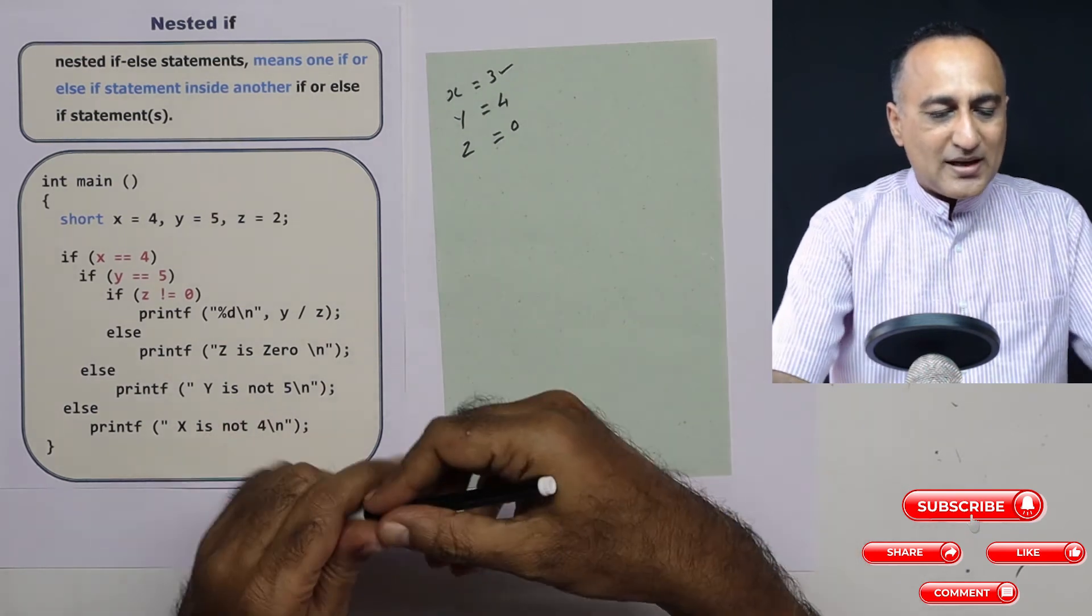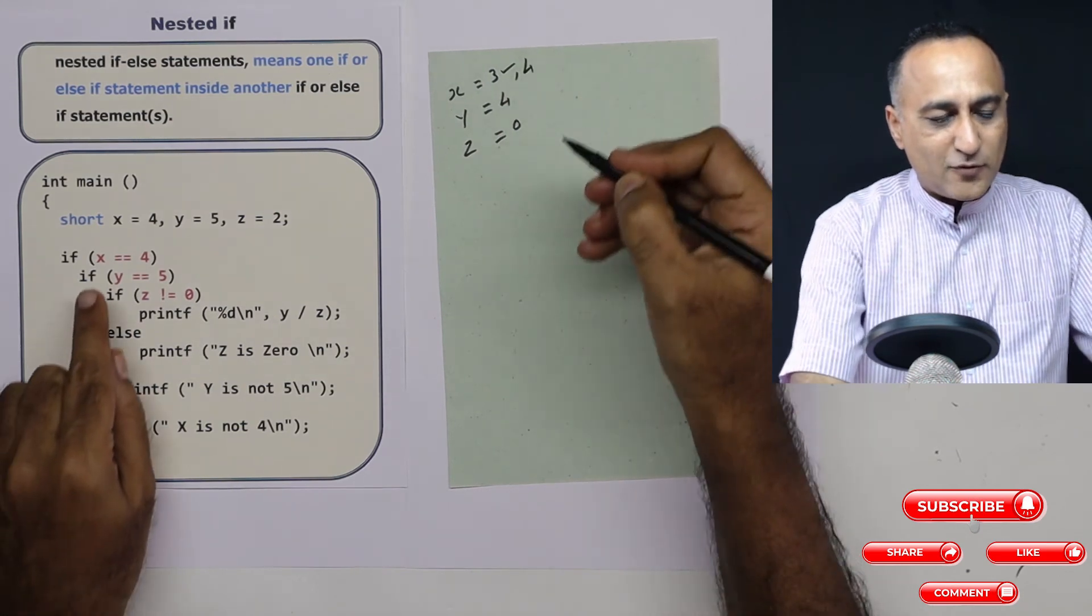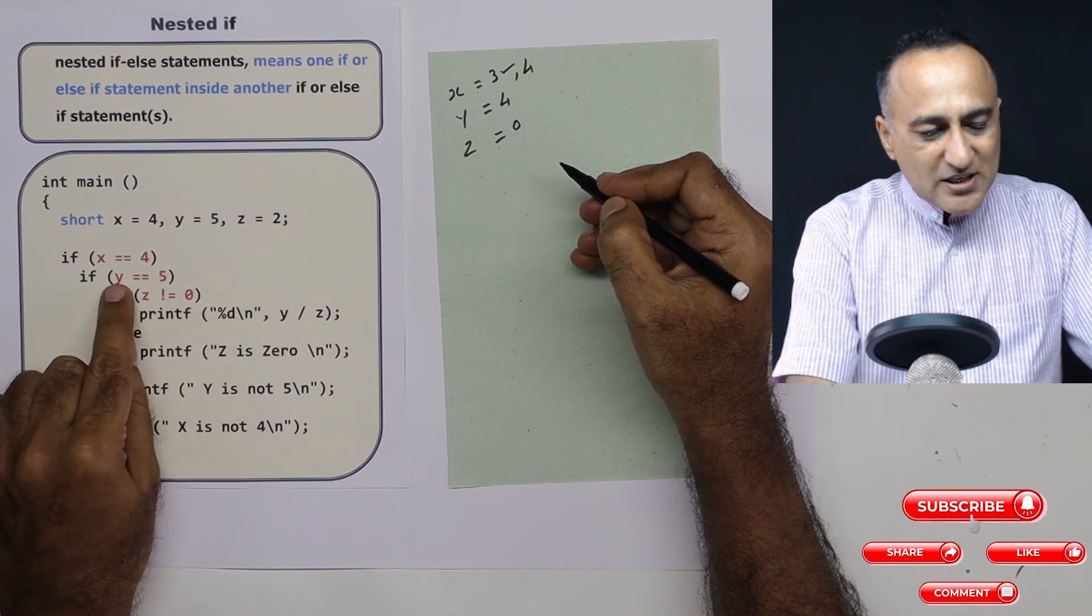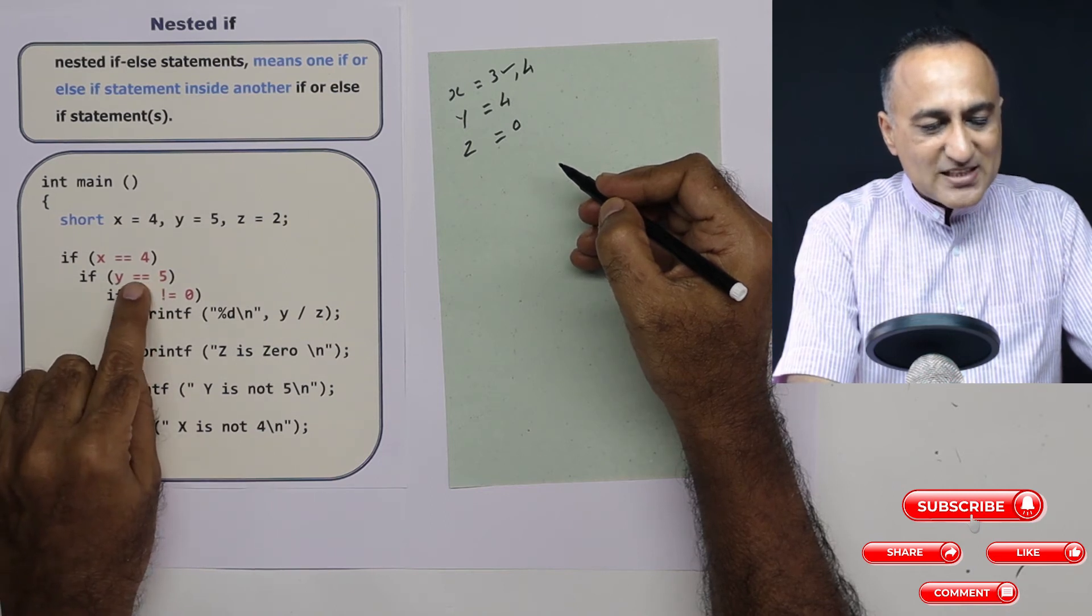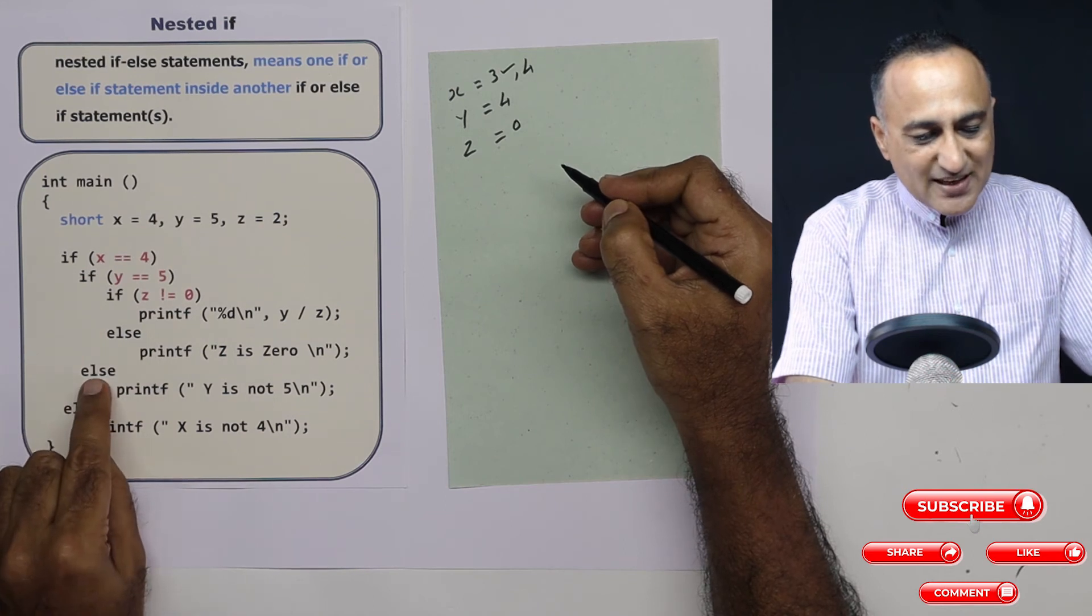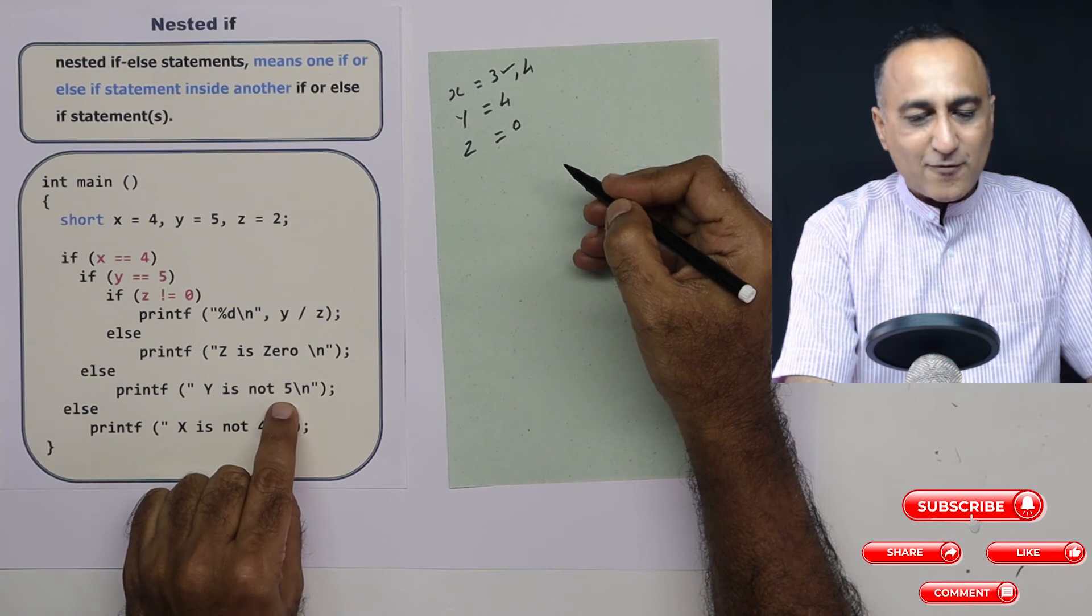Now let's take the value. Let's assume x is 4 and y is also 4. If x is 4 this is true. Now is 4 equal to 5? This is false. So since this is false it will come to this else which is associated with y. So it is going to print y is not 5.